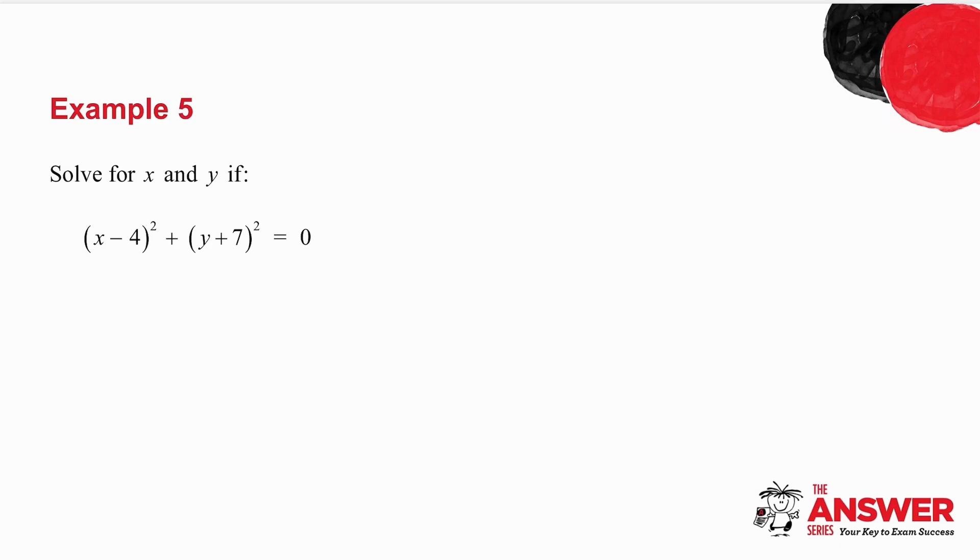Example number 5. I want you to solve for x and y. Now, the difference with this one is in the past, when I gave you simultaneous equations, I gave you two equations. This time, you only have one equation.